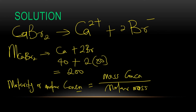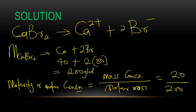Molar concentration equals mass concentration over molar mass. Mass concentration is 20 grams per dm cubed. Molar mass is 200 grams per mole. So molarity = 20 divided by 200 = 0.1 mol per dm cubed. We've now gotten the molarity of calcium bromide. Next, let's calculate the molarity of bromide ion.